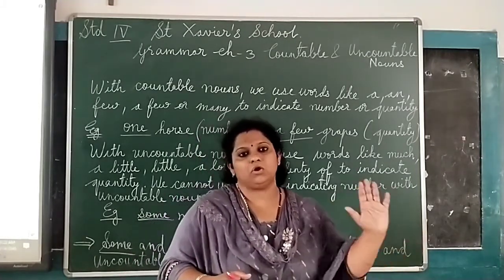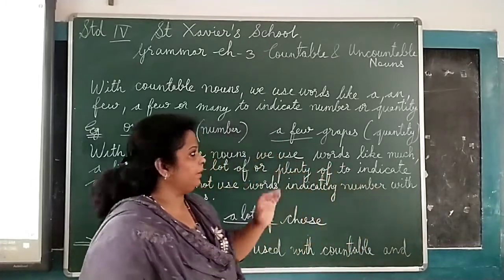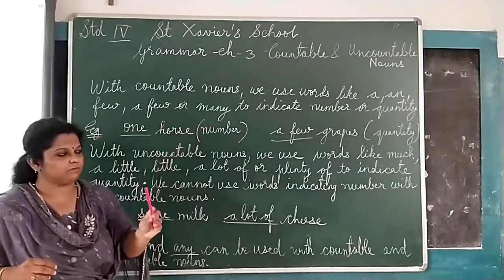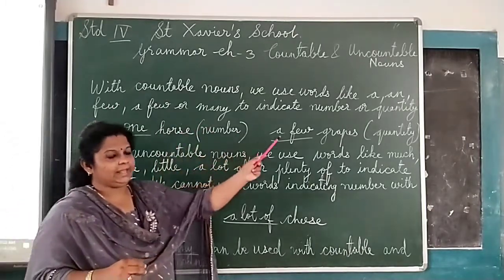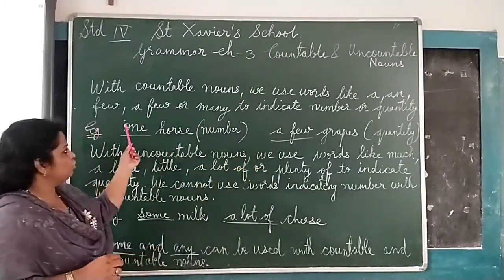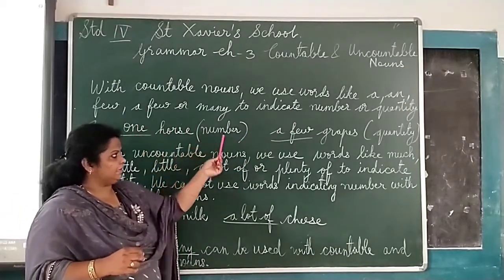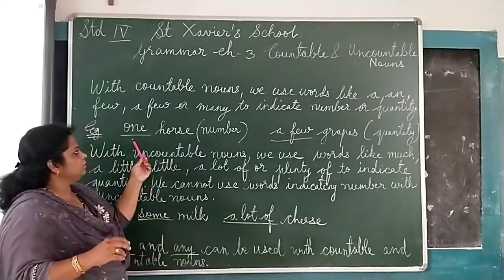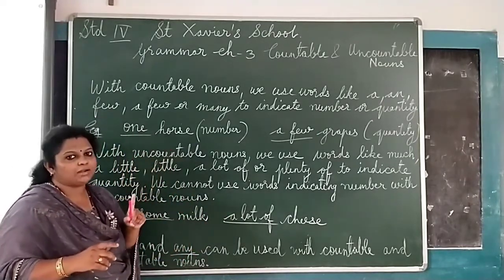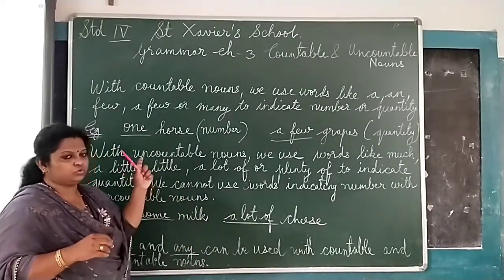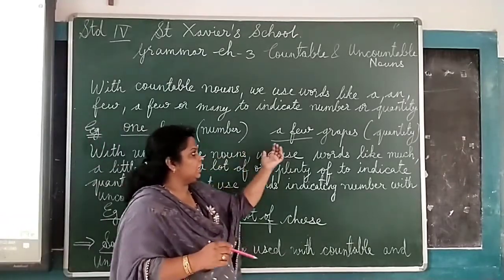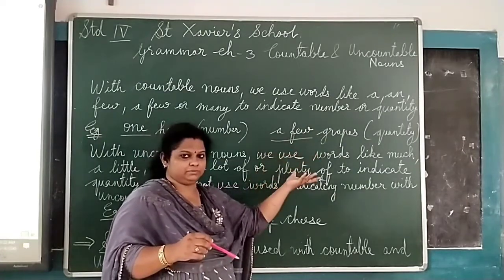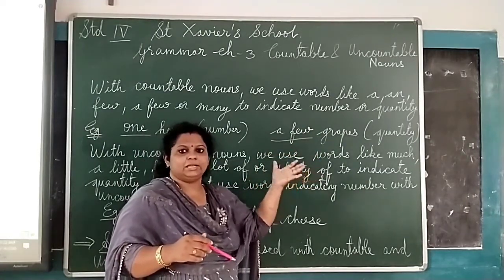So next, we move on to our next topic. With countable nouns, we use some words like 'a' and 'few', 'a few', or 'many' to indicate number or quantity. For example, here blank horse — one horse — we can count. And here blank bricks — a few bricks — we can say a few bricks, a few pens, like that.